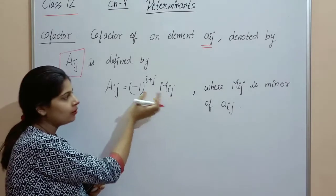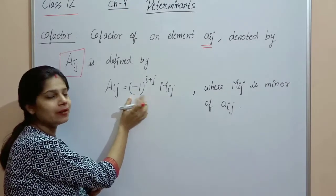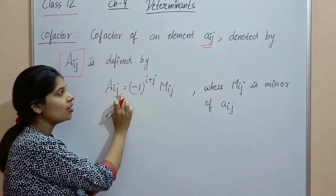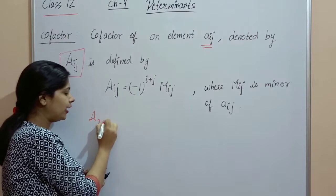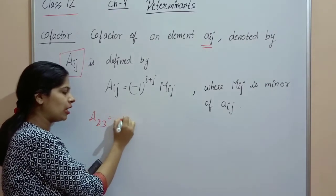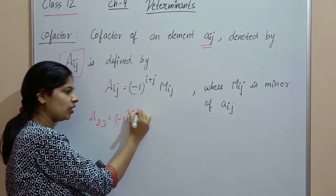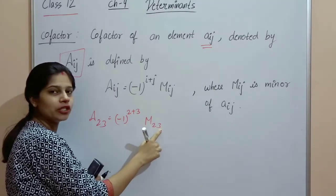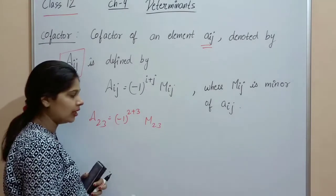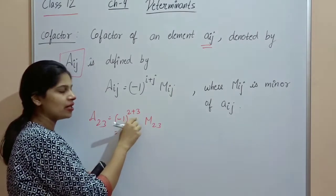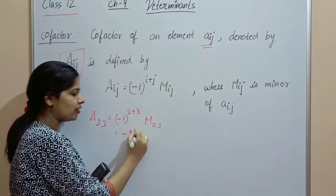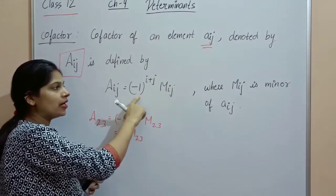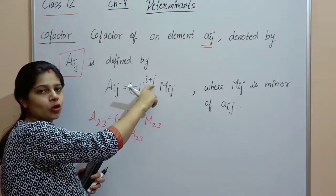So what is the co-factor Aij? It equals (−1)^(i+j) times Mij. That is the only difference: to get the co-factor from the minor, multiply by (−1)^(i+j) where i is the row and j is the column of the element.